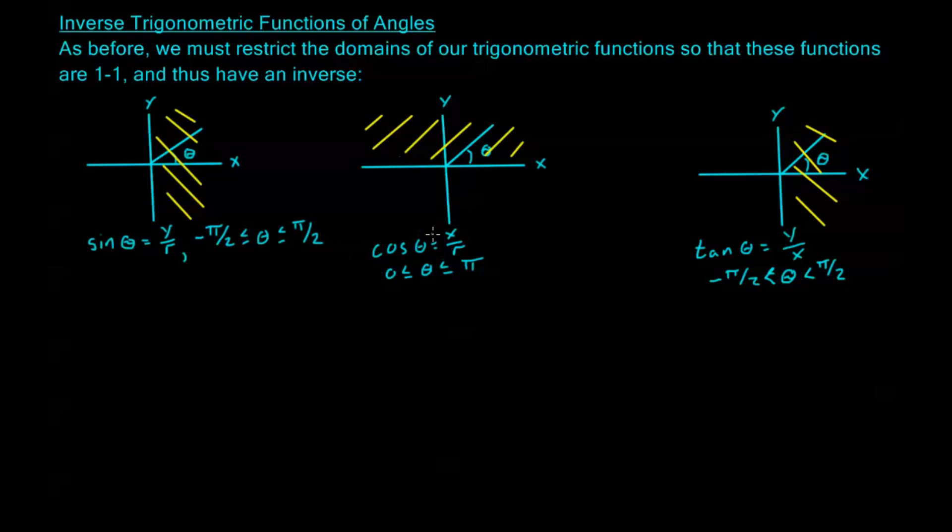So these are what our restricted domains look like in terms of the angles. And just remember I'm drawing in these quadrants but specifically we should be looking here to know exactly what I mean. I don't mean for example here for cosine 5 pi over 2 is right here on the positive y axis but that's not between 0 and pi so that's not going to be a candidate for the domain of my restricted cosine.